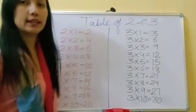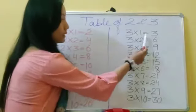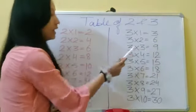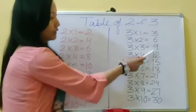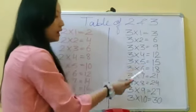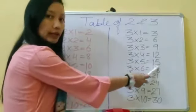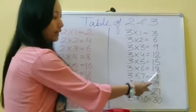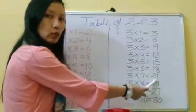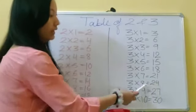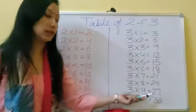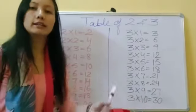Table of three: three ones are three, three twos are six, three threes are nine, three fours are twelve, three fives are fifteen, three sixes are eighteen, three sevens are twenty-one, three eights are twenty-four, three nines are twenty-seven, three tens are thirty.